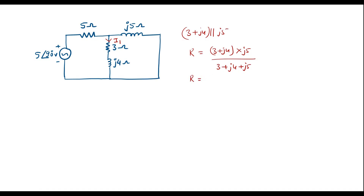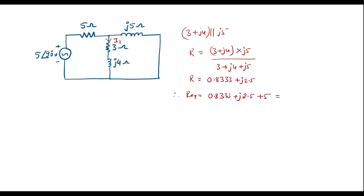Solving this — feed these values directly into the calculator, keeping the calculator in complex mode — we get R = 0.8333+j2.5. This resistor is in series with the 5 ohm resistor. Therefore, the final R equivalent is obtained by adding 5 to this result. That is, 0.8333+j2.5+5.